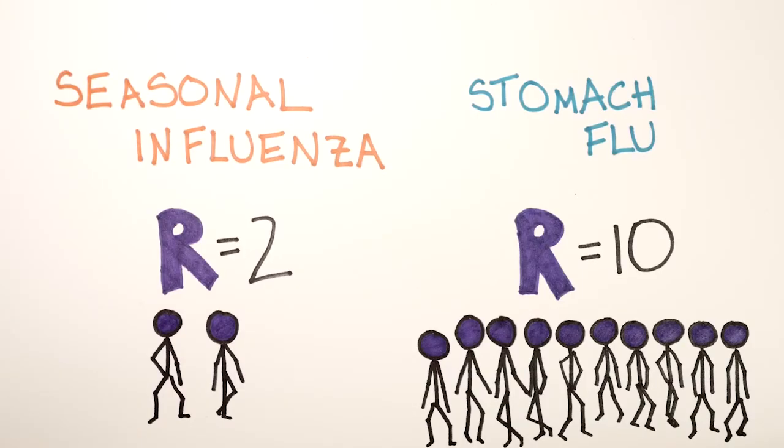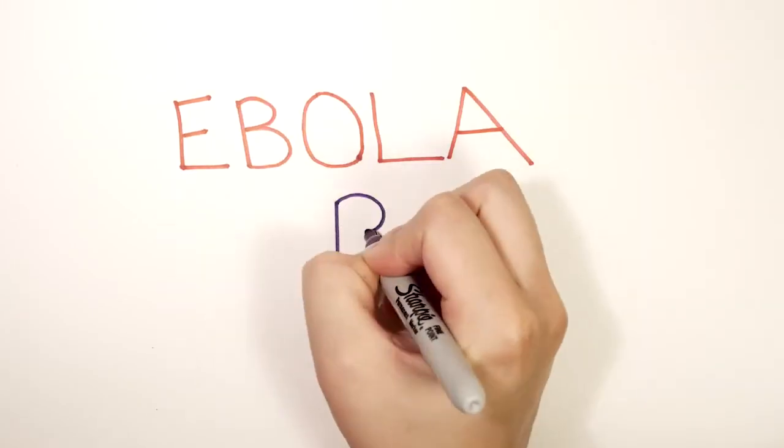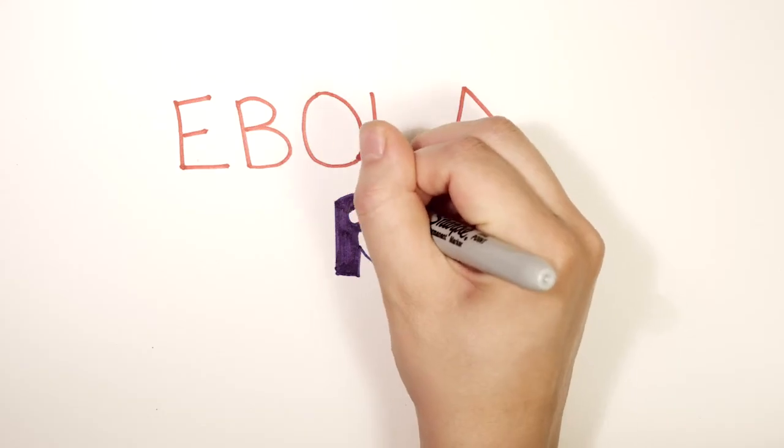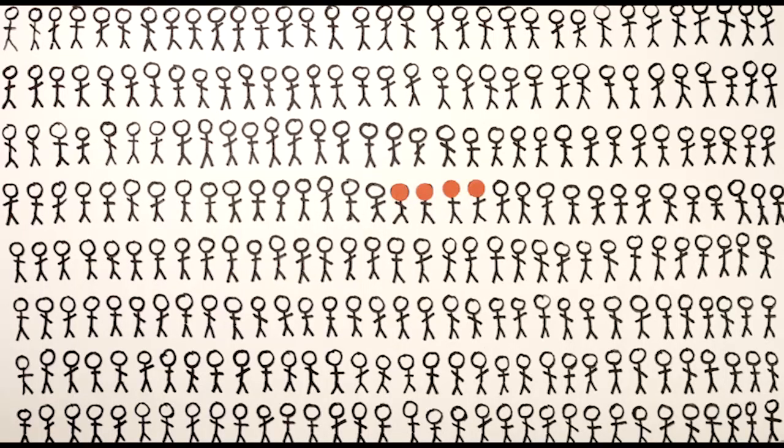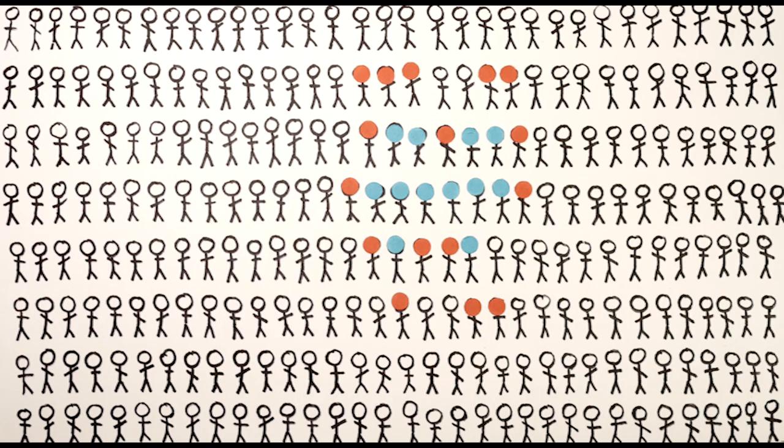So now that we've seen the R-numbers for some diseases that we know, what do you think the R-value for Ebola would be? Take a guess. In fact, the 2014 outbreak of Ebola in West Africa had an R-number of two. This is partly because a person infected with Ebola is only infectious for a short period of time after they develop symptoms.